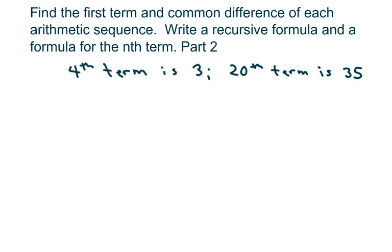Hey everyone, this is part 2 of finding the first term and the common difference of each arithmetic sequence. We're also going to find the recursive formula and a formula for the nth term. So we have to find four things: A, D, write a recursive formula, and a formula for the nth term. The formula we're going to use is a sub n equals a plus n minus 1 times d.